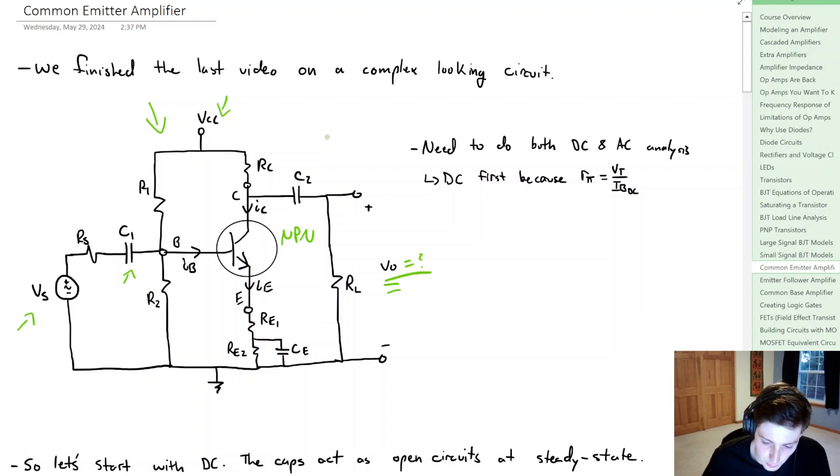We wanted to determine what that output voltage was equal to. To figure out what that output voltage is, we needed to do both DC and AC analysis, and we said that we needed to do the DC analysis first. The reason for that was because we need to find this value of Rpi, which is equal to that thermal voltage divided by the DC base current.